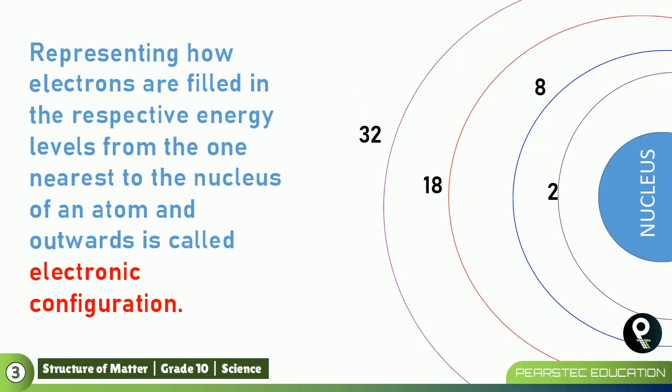Now, the maximum electron that the first energy level can carry is two. And the second, eight. And the third is 18. And the fourth is 32. Now, we understood that those are called electronic configuration. Now, let's read that one. Representing how electrons are filled in the respective energy levels from the one nearest to the nucleus of an atom and outward is called electronic configuration. Now, electronic configurations goes on like that. Now, let's understand. And let's talk about silicon.